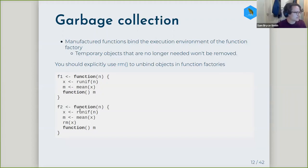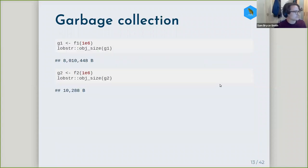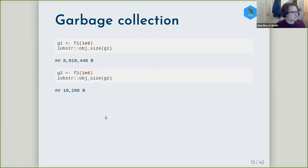In this example, if you had a function like F1, where the captured function just needs the value assigned to M, it's good practice to remove this intermediate object explicitly using RM. To give an example of the effect this has: you can clearly see that the object size of the first function where you don't explicitly remove the temporary object is much larger than if you do explicitly remove it. So if your factory function is producing a large object, you should make sure you remove any temporary objects with RM.